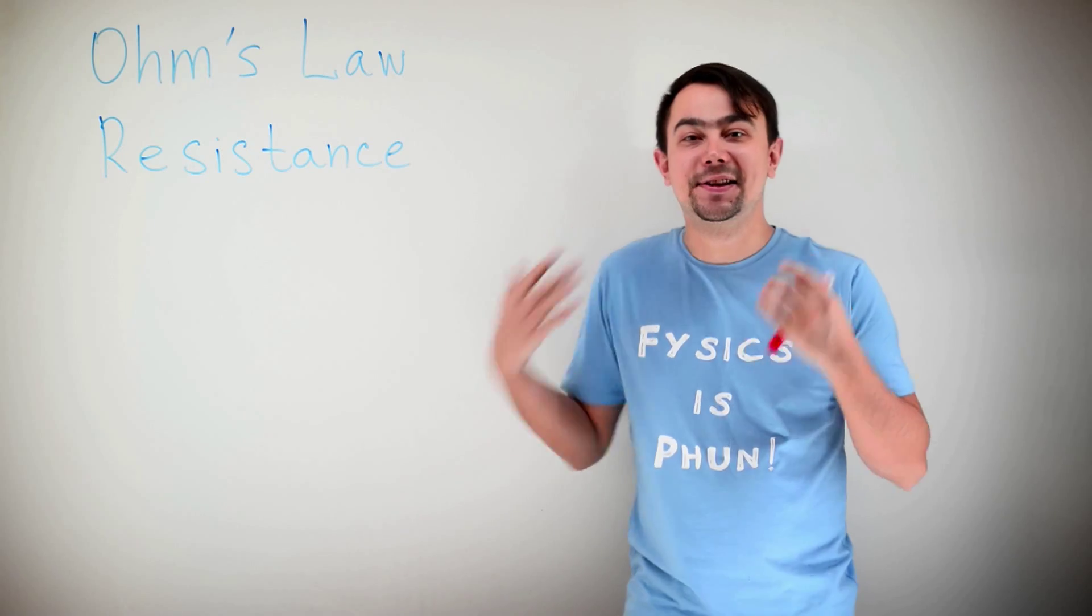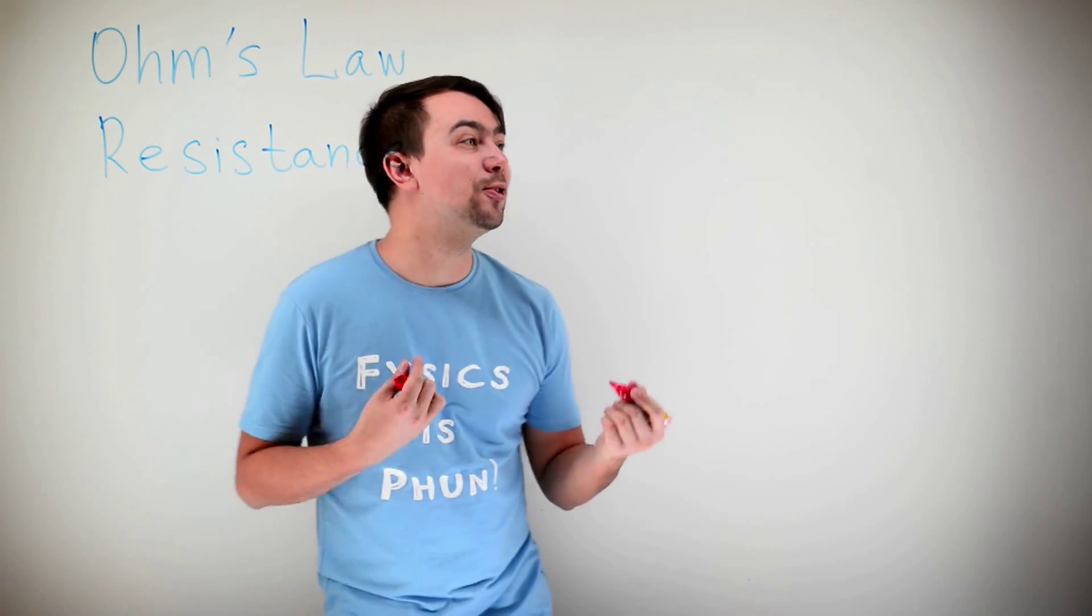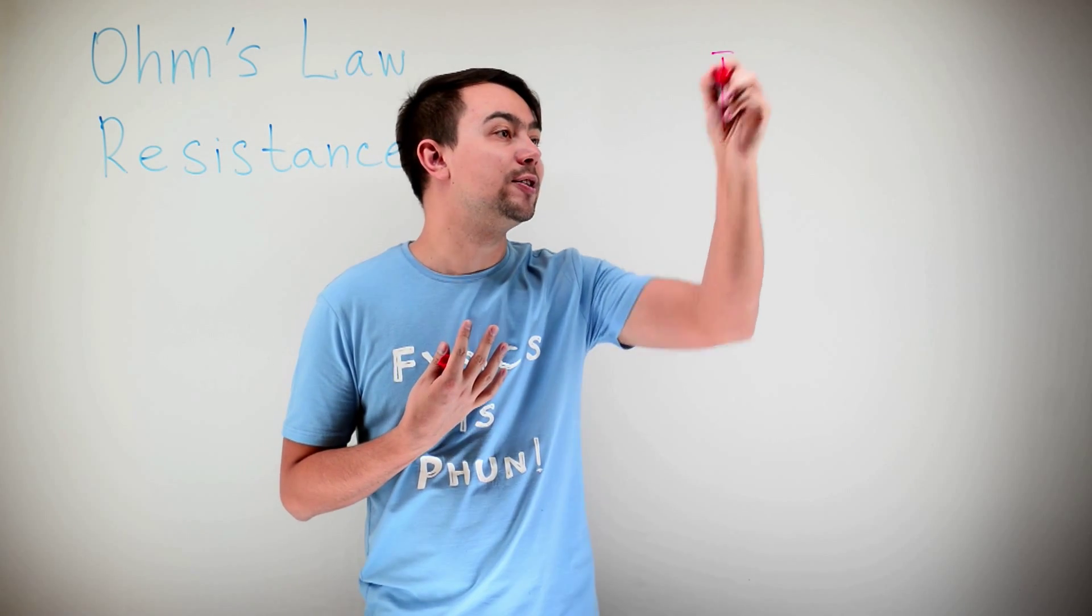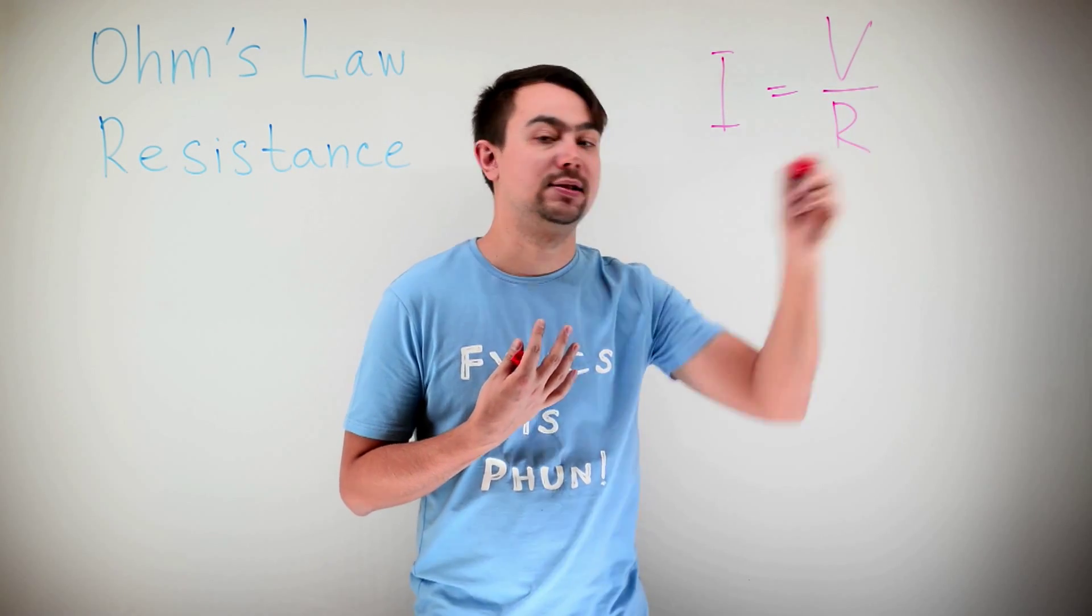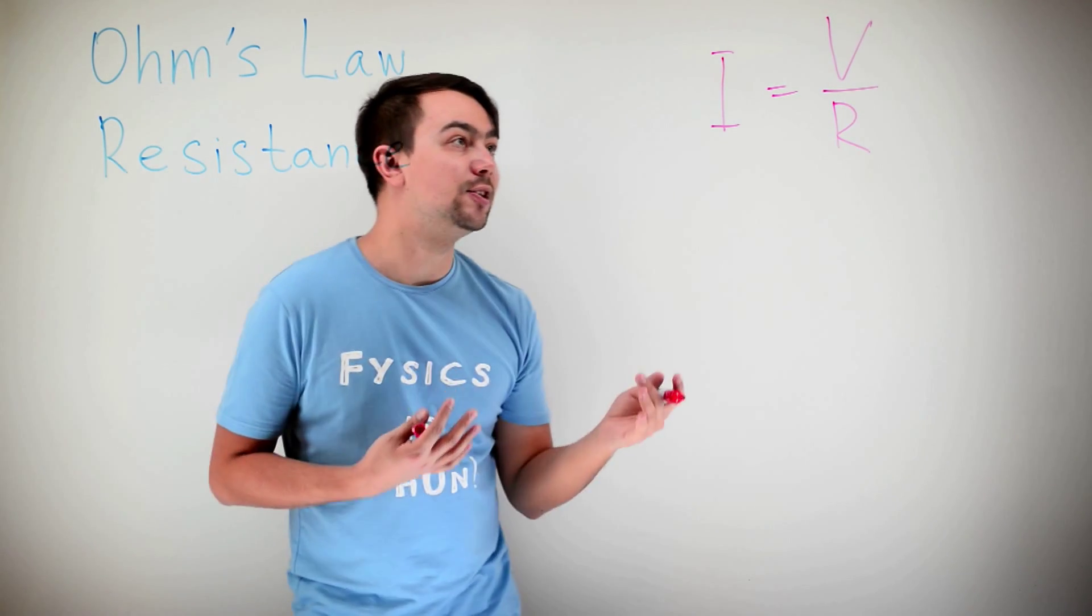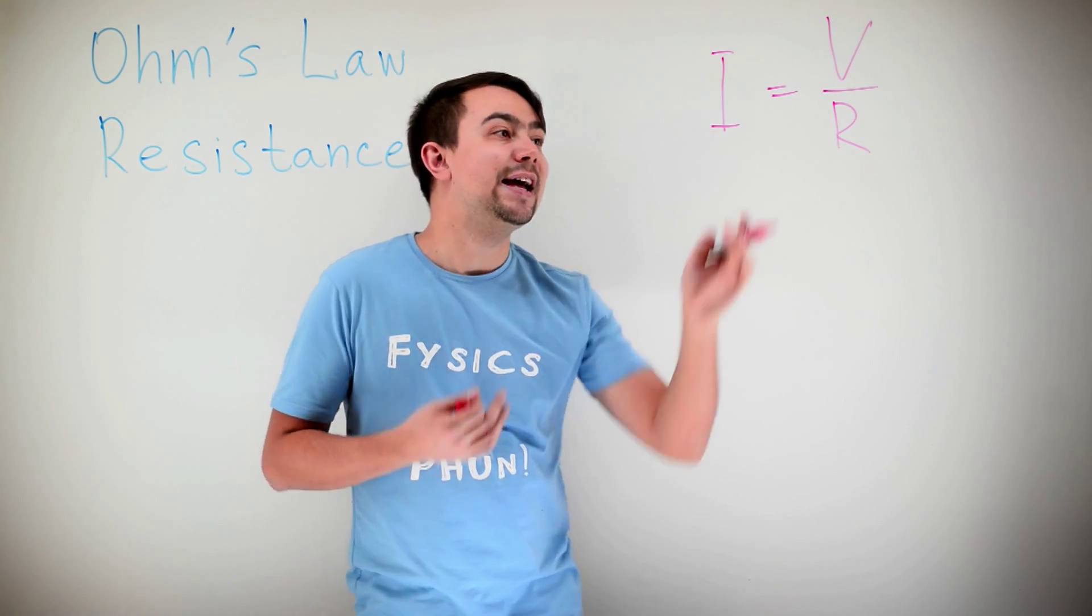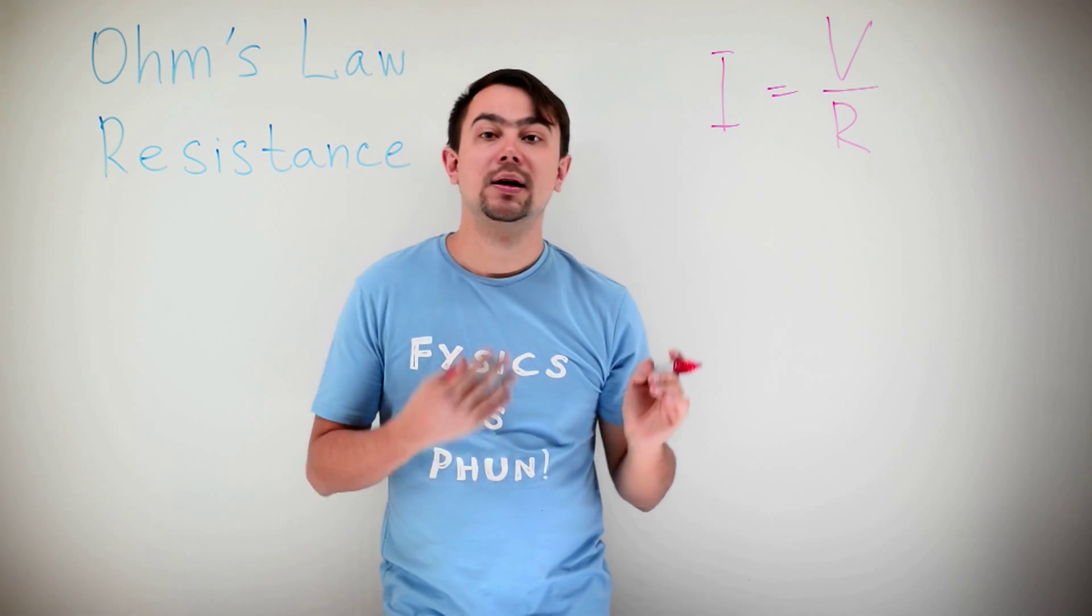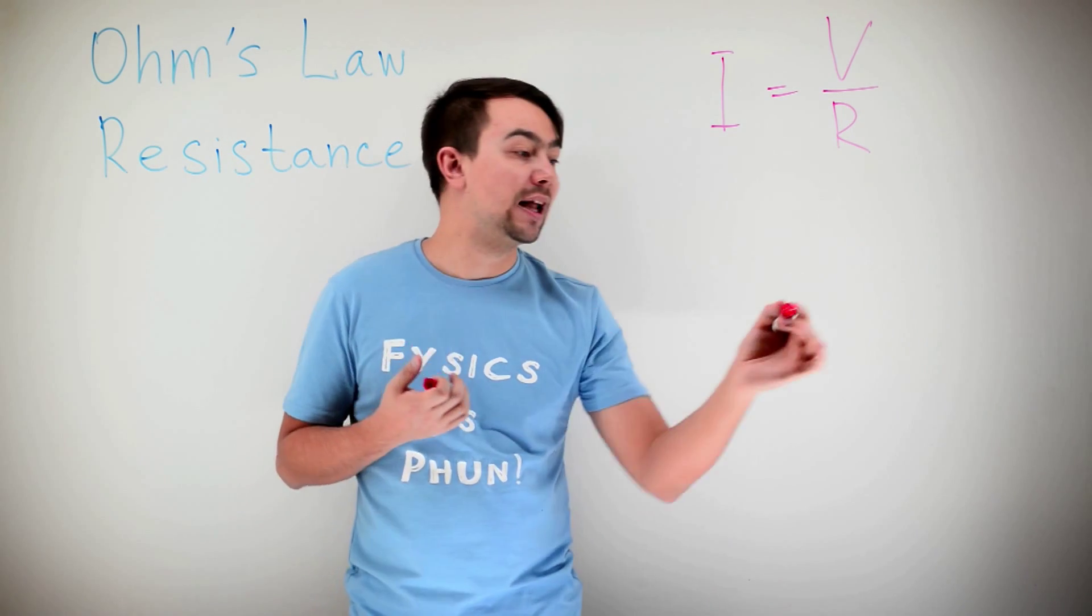And now, Ohm's law. What we came for. The Ohm's law looks pretty simple. It looks like this: current is equal to voltage divided by resistance. What it says here, that the current is directly proportional to voltage and inversely proportional to resistance. Ohm's law is for one element, for example, a lamp.